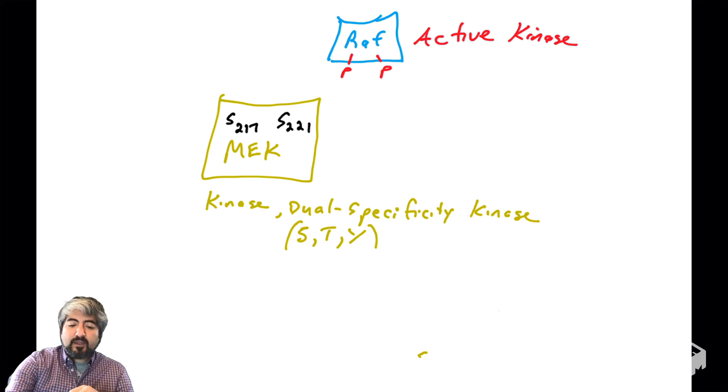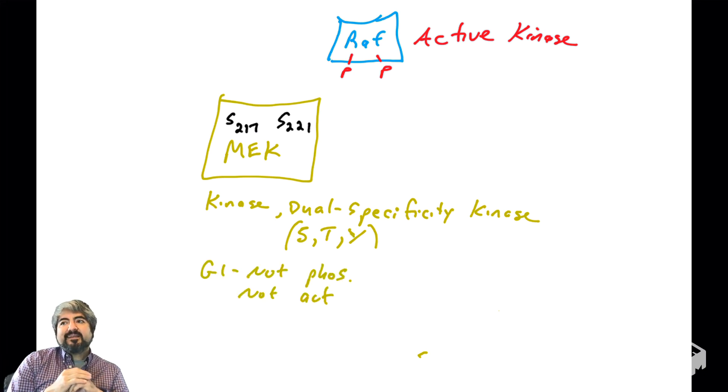Now we've introduced this new protein called MEK. MEK, when it is not phosphorylated, and typically that is in G1 phase of the cell cycle, it is not active. Phosphorylation can regulate a protein's activity. Let's see how MEK's activity is regulated by phosphorylation. Cells are in G1, MEK not phosphorylated, not active.